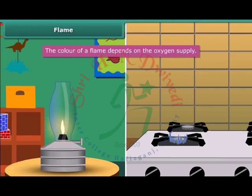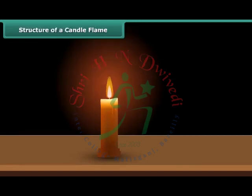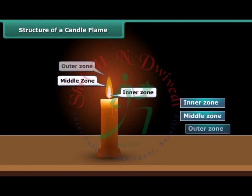When we burn a candle with a matchstick, the heat of the matchstick melts and vaporizes wax, which rises through the wick and forms a flame. A candle flame can be divided into three regions: inner zone, middle zone, and outer zone.